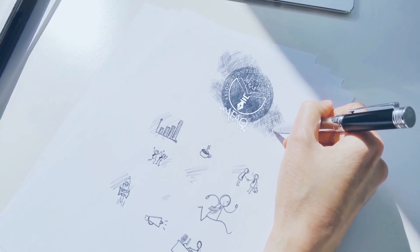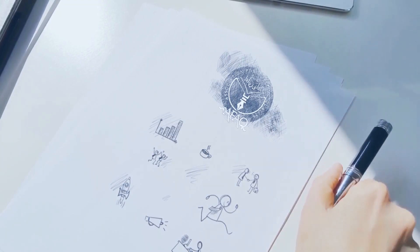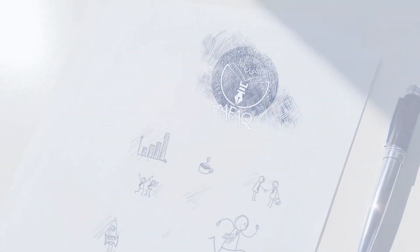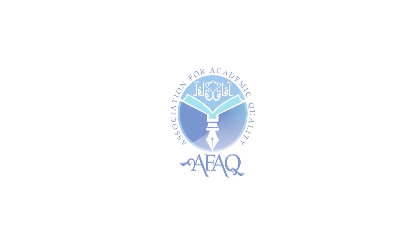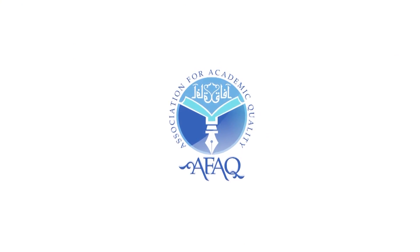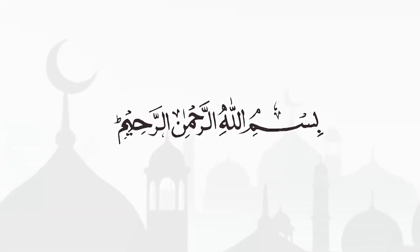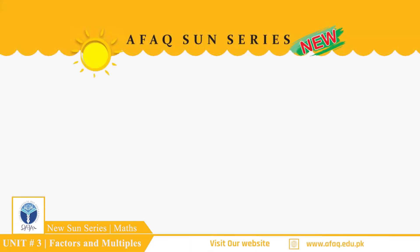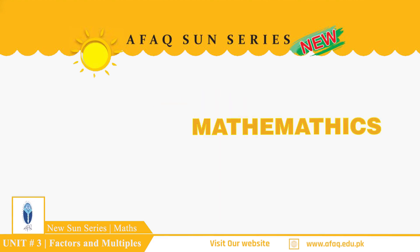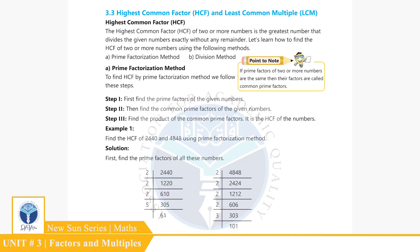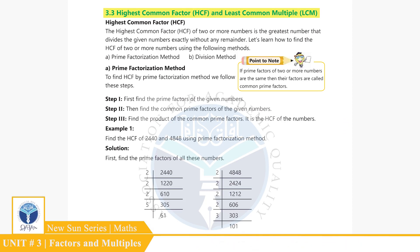Welcome back to our new son series student resource pack, keep learning at home. Mathematics Grade 6, Academic Planner, Unit 3, Topic 3.3: Highest Common Factor and Least Common Multiple, page 40.